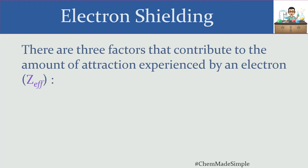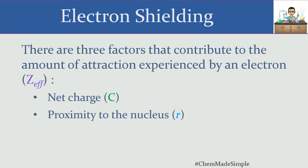There are three factors that contribute to the amount of attraction experienced by an electron, and that combined measure of attraction is something we call the effective nuclear charge. The effective nuclear charge is actually a number we can calculate somewhat experimentally — the exact method is probably beyond the scope of this discussion. Theoretically, we can calculate an effective nuclear charge for each electron in the atom. This is going to be a combined rubric from the net charge — whether we have a neutral atom, a cation, or an anion — and also how far that particular electron is from the nucleus.